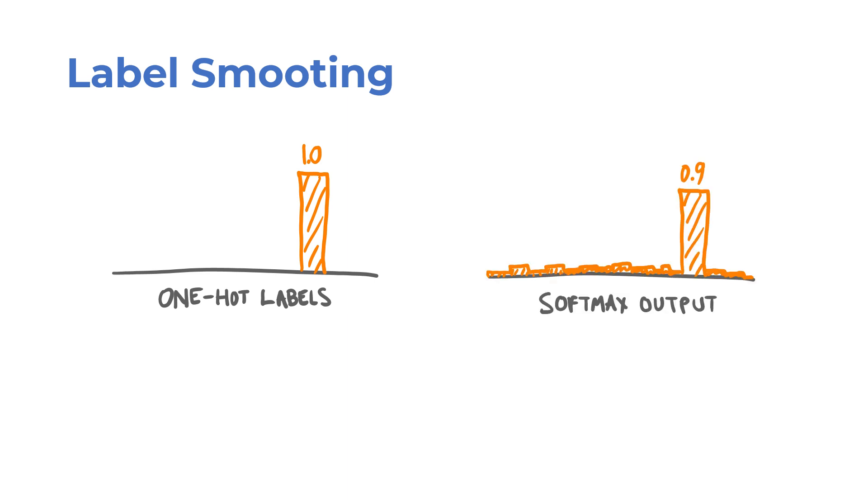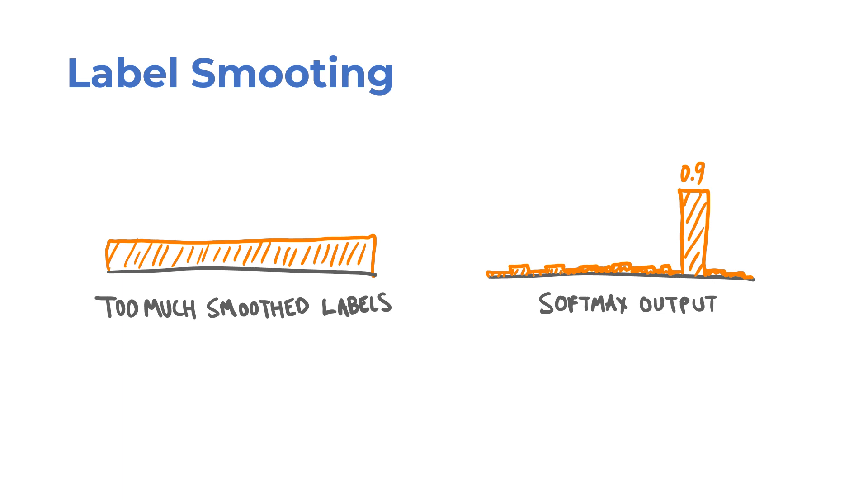However, a softmax function at the end of a model never outputs one-hot vectors. And this creates a gap between the distributions of the ground-truth labels and model predictions. And label smoothing shrinks that gap. This is done by subtracting some epsilon from the true labels and adding it to the others. This approach prevents models from being too sure and also acts as a regularizer. But keep in mind that very large values of epsilon would flatten out the labels too much. The stronger the label smoothing is, the less information the labels retain.